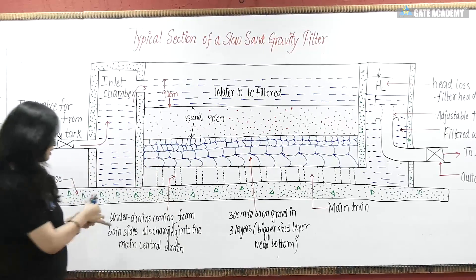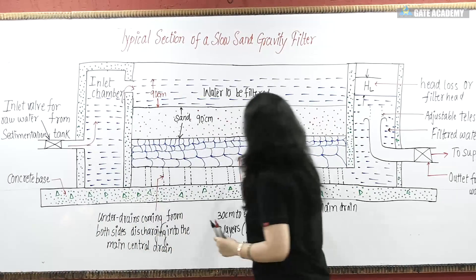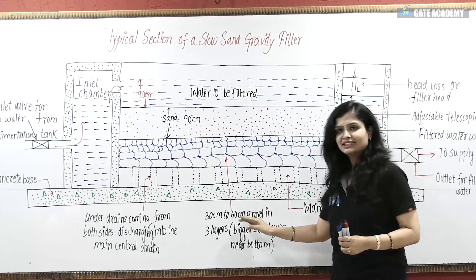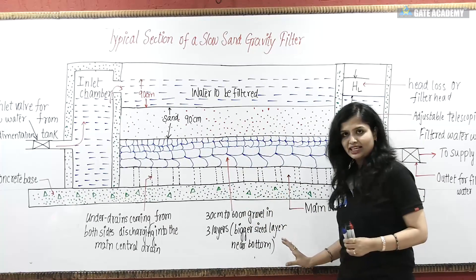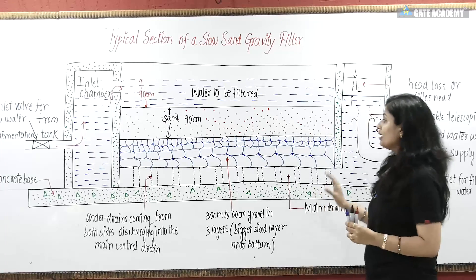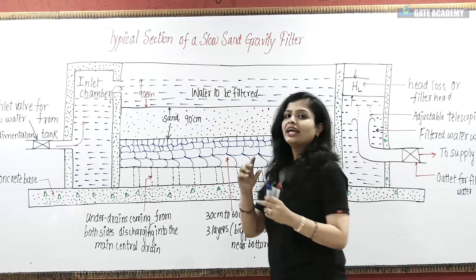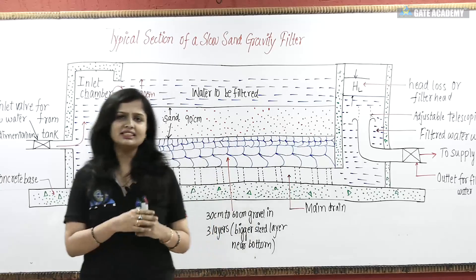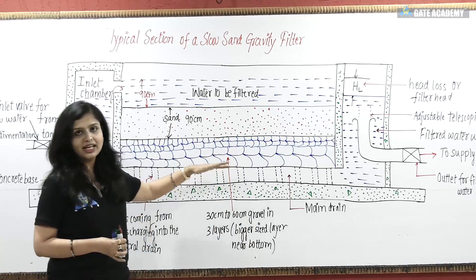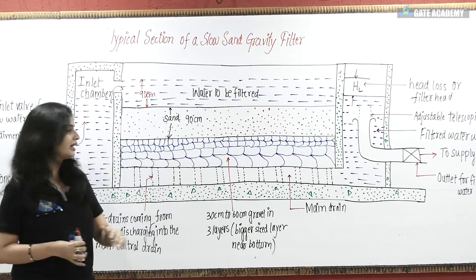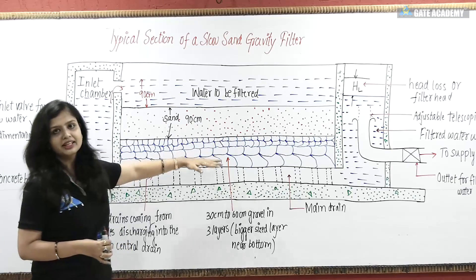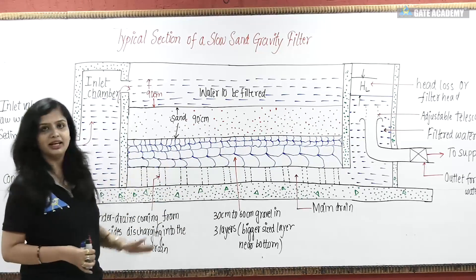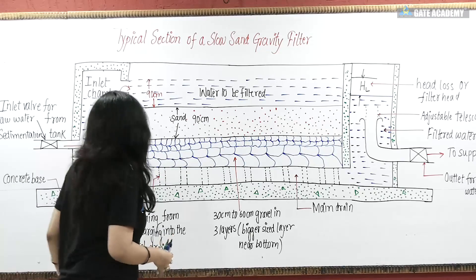For the base material, which is gravel, the depth is 30 to 60 cm, sometimes 60 to 90 cm. This is generally 3 to 4 layers of 15 to 20 cm depth each. The finer gravel particles are in the topmost layer and the coarser particles of gravel are at the bottom.